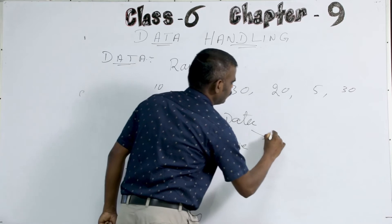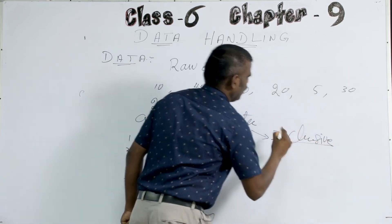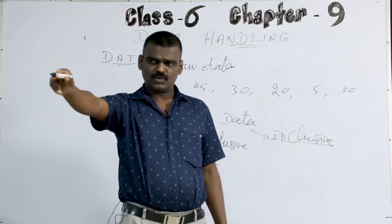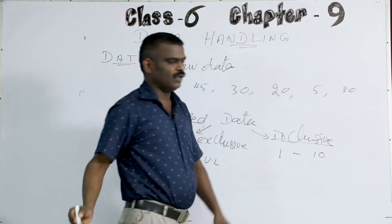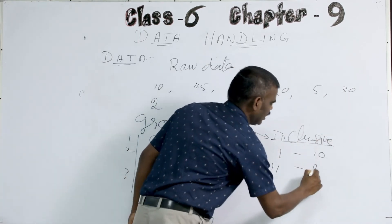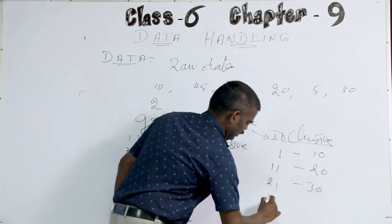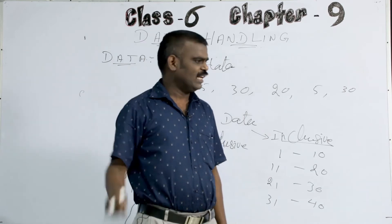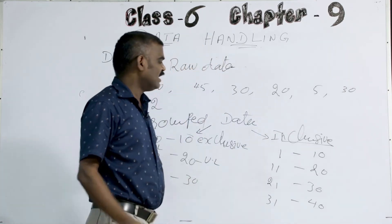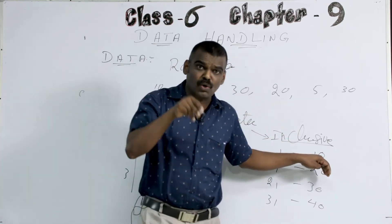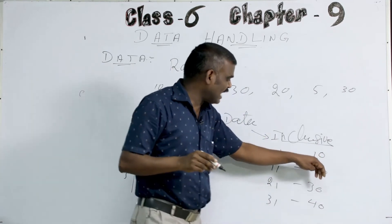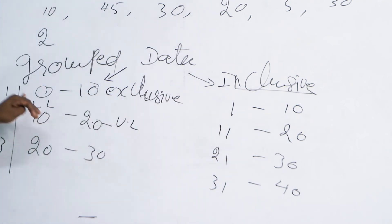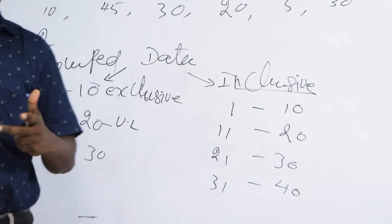Another type is inclusive. In inclusive grouping it is very clear: whoever got marks 1 to 10 go that side, 11 to 20 come this side, 21 to 30, 31 to 40. Now there is no confusion — nobody will be in the middle. Inclusive means the upper limit is included in that group itself; it will not go to the next level.